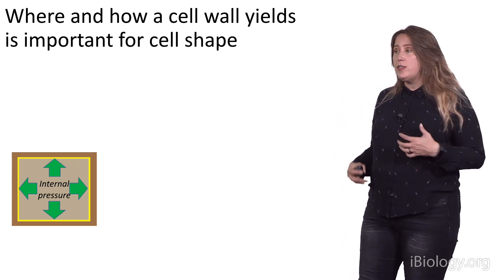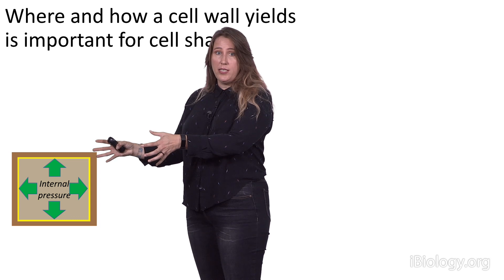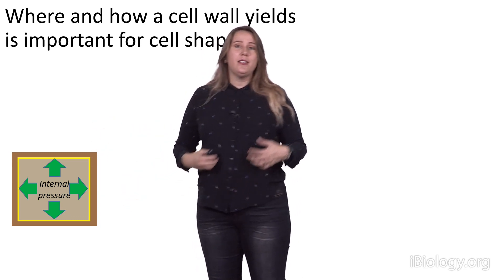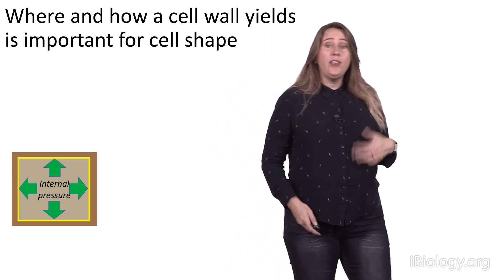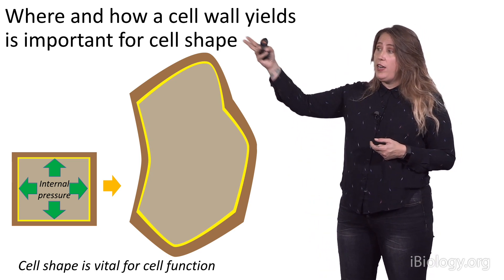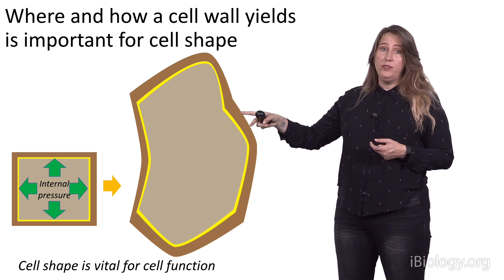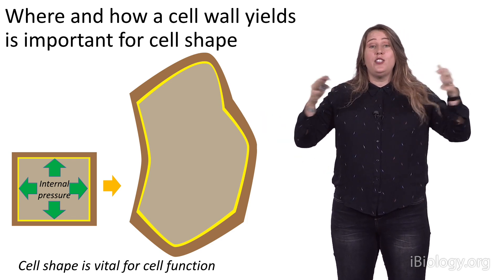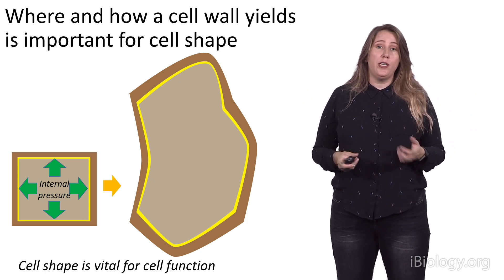Let's imagine we start with a simple square cell. It has a massive amount of turgor pressure inside, but it's not going to yield all over. Instead, that cell wall box is going to yield in different patches more than others. What that can give you is a really complex and interesting cell shape, where some areas have expanded more than others. That particular cell shape, connected to its neighbors, is what's going to end up giving us organ, tissue, and organismal function.